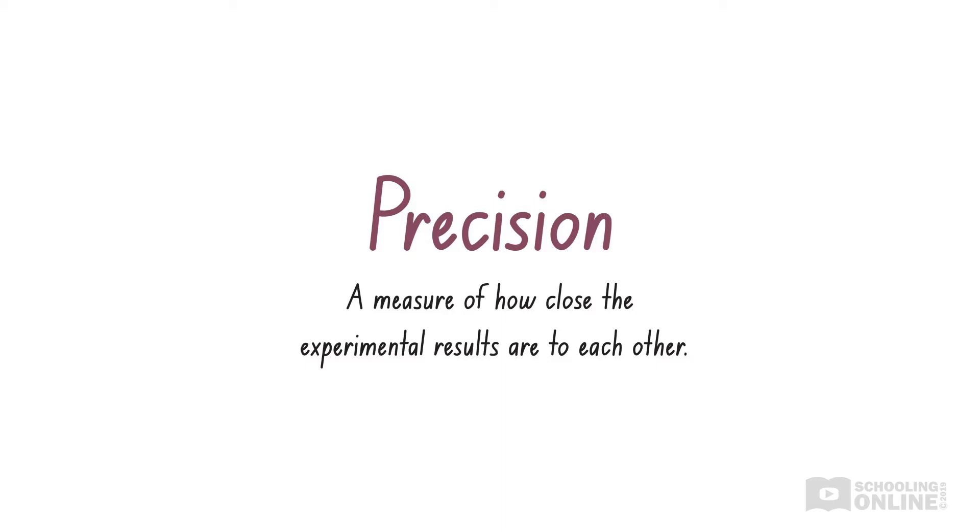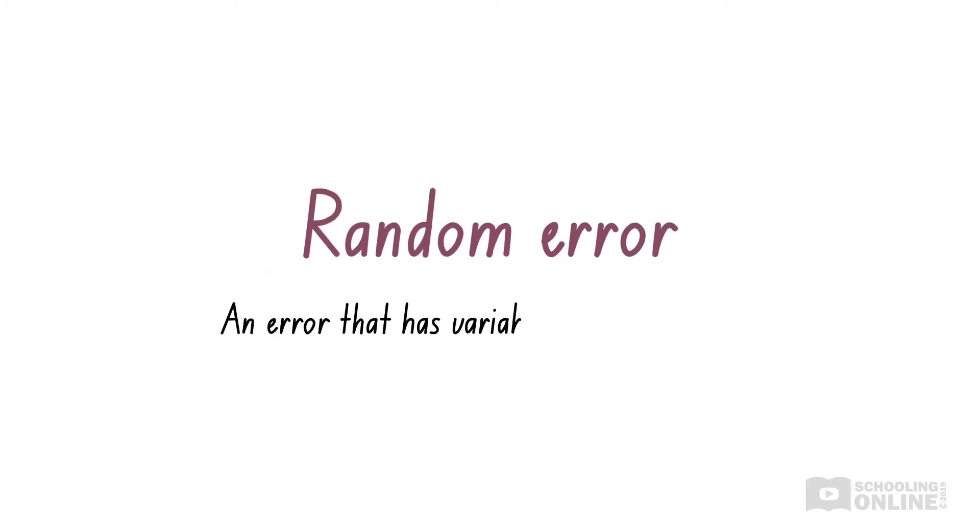In this video, we will explore factors that affect the reliability of an experiment. Even if we have performed our experiment correctly, we might get slightly different results each time. This is due to random errors. A random error is an error that has variable size and direction. That is, random errors affect experiments in unpredictable ways.